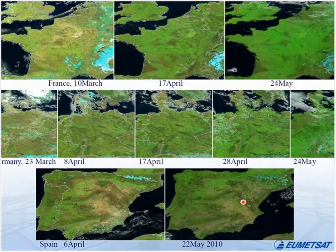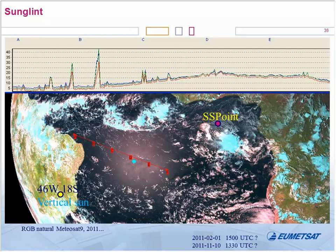The snow index is defined as channel 3 minus channel 1 divided by channel 3 plus channel 1 — and you can see clearly in black the snow areas. It's not perfect but it's a good approximation, and the jump in vegetation at this time of year — around April — shows the area is much greener when you look at the color composite.